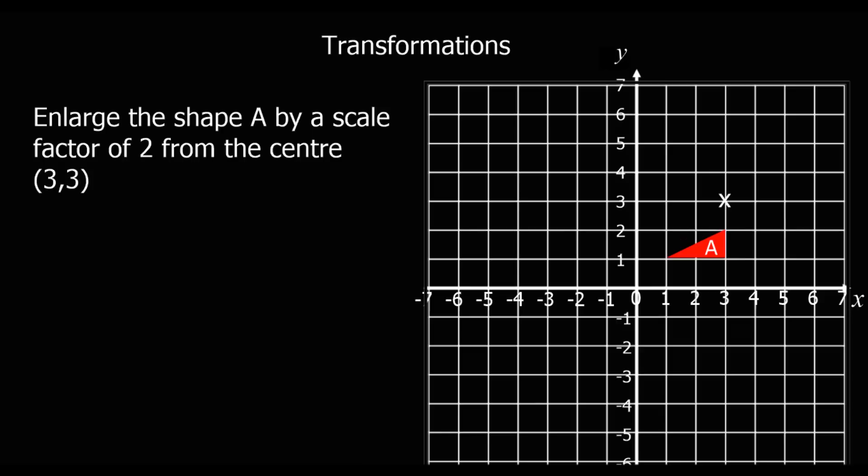Enlarge shape A by a scale factor of 2, so times 2 again, from the centre of (3, 3). So this time, this is where I'm doing the enlargement from. So to get to this point here, I was 1 down.